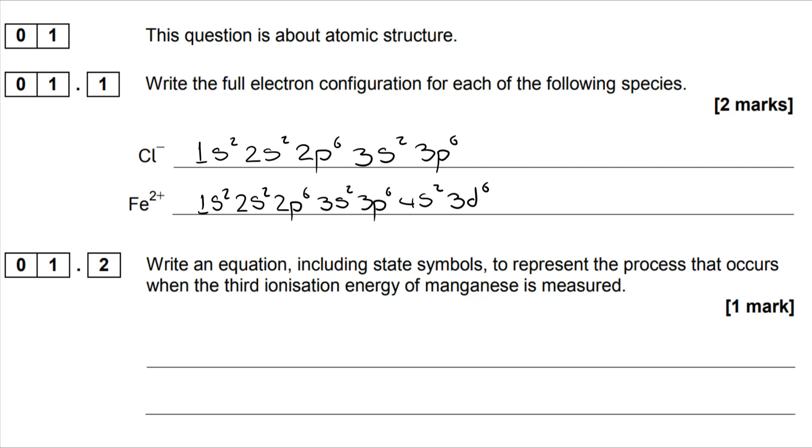When we do Fe²⁺, you'll again notice I've done this for the Fe atom to begin with. There's a particular rule that you have to remember when you're doing the electron configuration of transition metal ions, and that is that you empty the 4s sublevel before you empty the 3d sublevel. And so we're left with this.